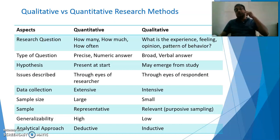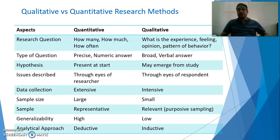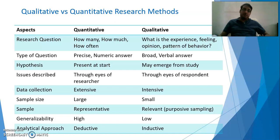In terms of the type of question: for quantitative research, the question should be precise and it should yield a numeric answer. For qualitative, the type of question should be broad and verbal — it should require a verbal answer.